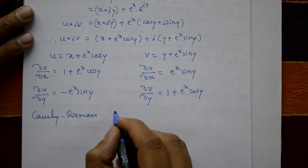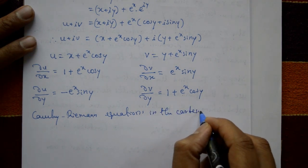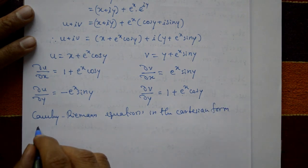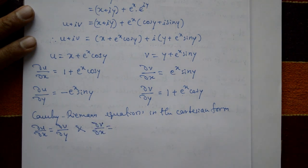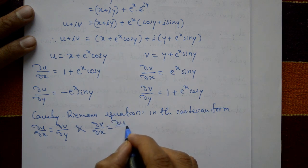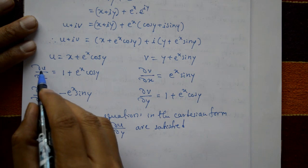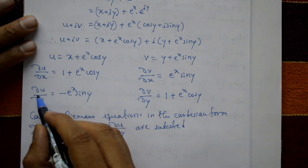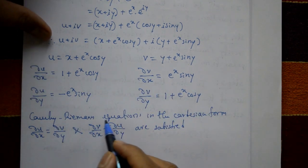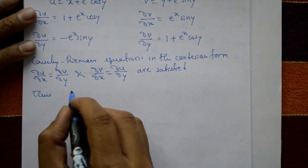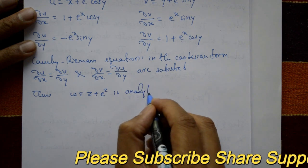Now applying the Cauchy-Riemann equations in Cartesian form: ∂u/∂x = ∂v/∂y, and ∂v/∂x = −∂u/∂y. Both equations are satisfied. Thus, the Cauchy-Riemann equations are satisfied, and therefore w = z + e^z is analytic.